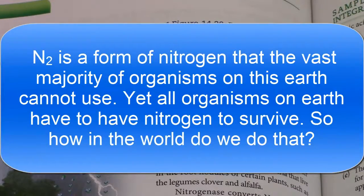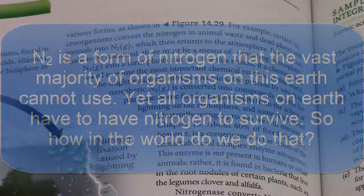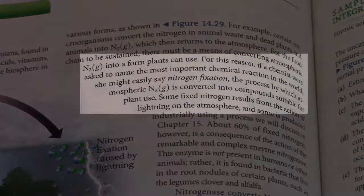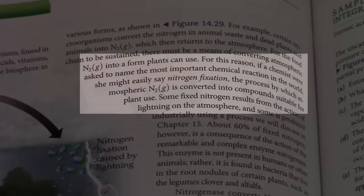I'll pause and just mention: N2 is a form of nitrogen that the vast majority of organisms on this earth cannot do anything with, yet all organisms on earth have to have nitrogen to survive. So how in the world do we do that? Well, we'll read on. For this reason, if a chemist were asked to name the most important chemical reaction in the world, she might easily say nitrogen fixation — the process by which atmospheric N2 is converted into compounds suitable for plant use, in other words, useful forms of nitrogen.